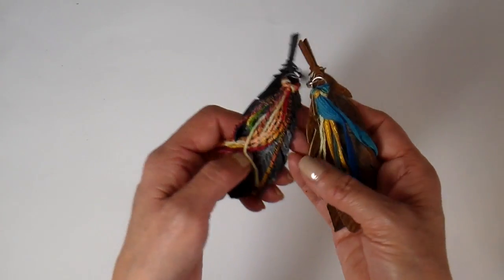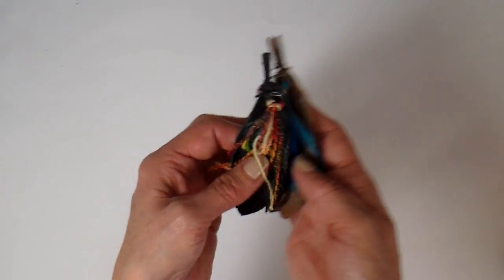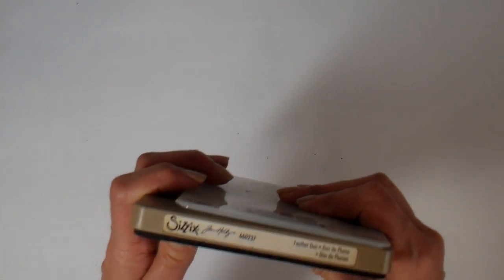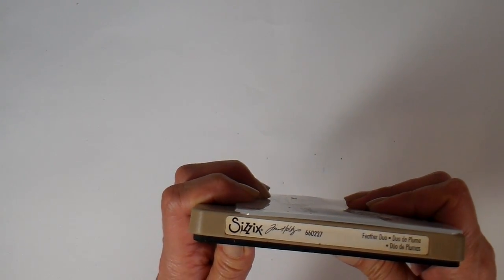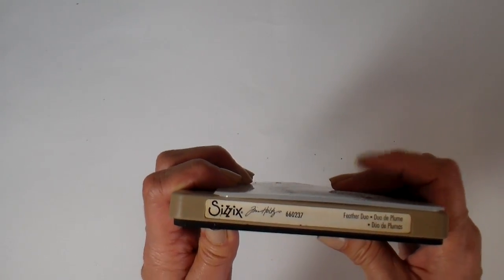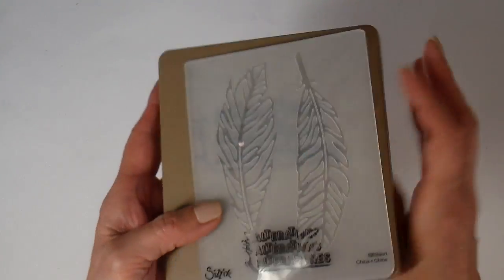They went together really slick. I have both black and the brown leather. I used a Tim Holtz Sizzix die called the Feather Duo to cut the leather or to cut the feathers.